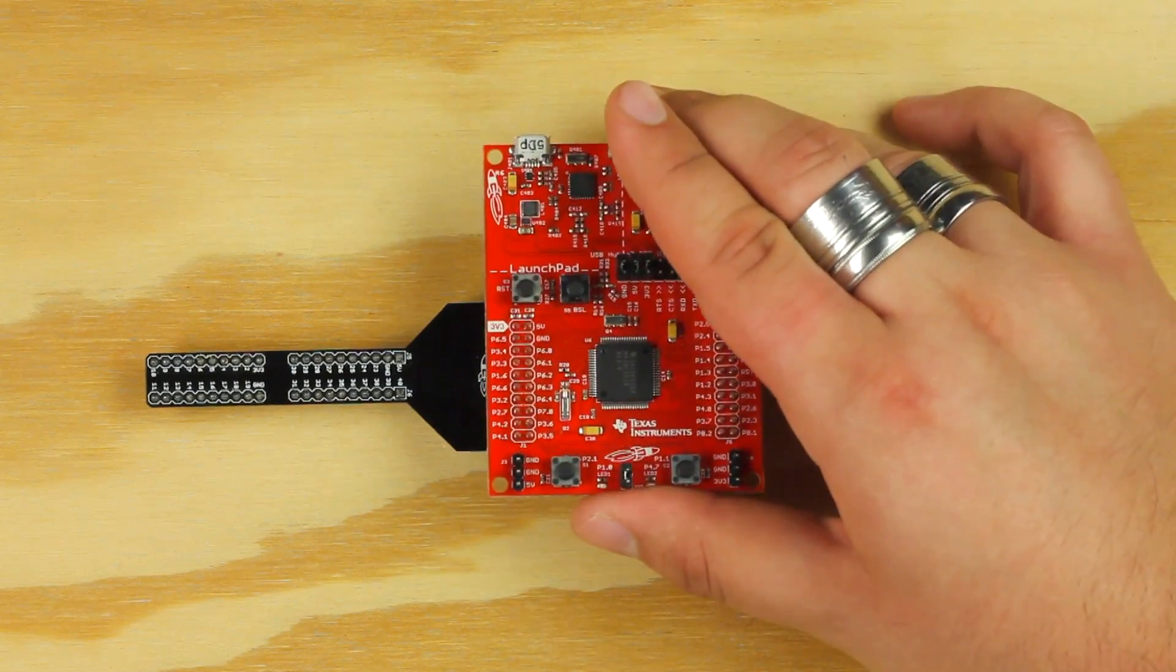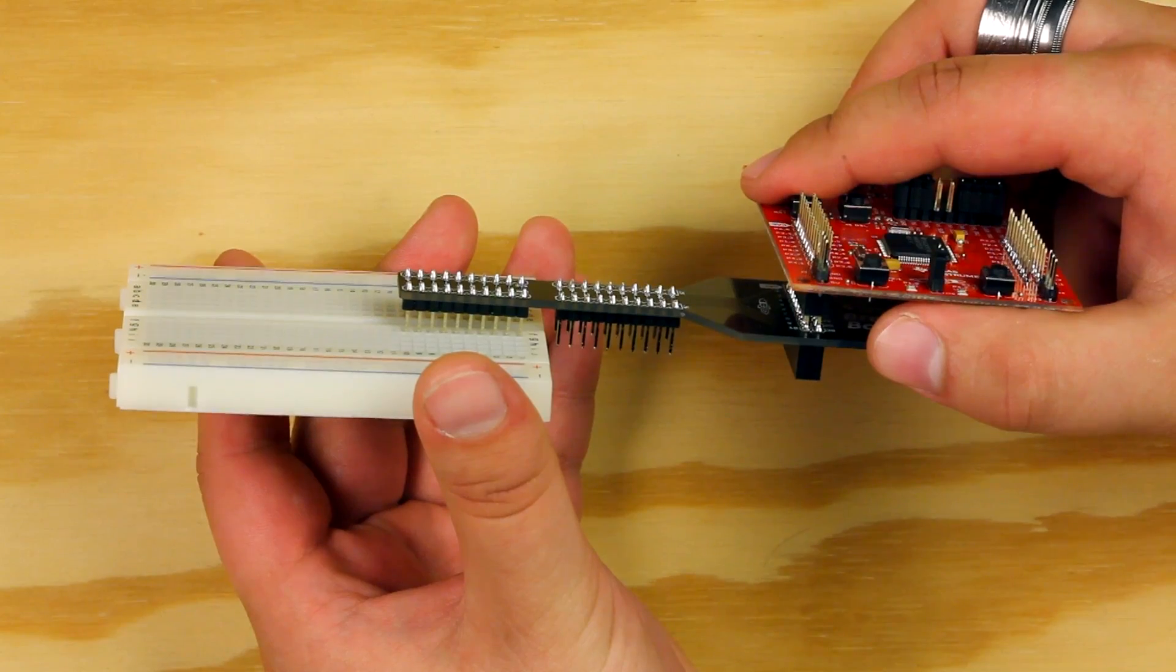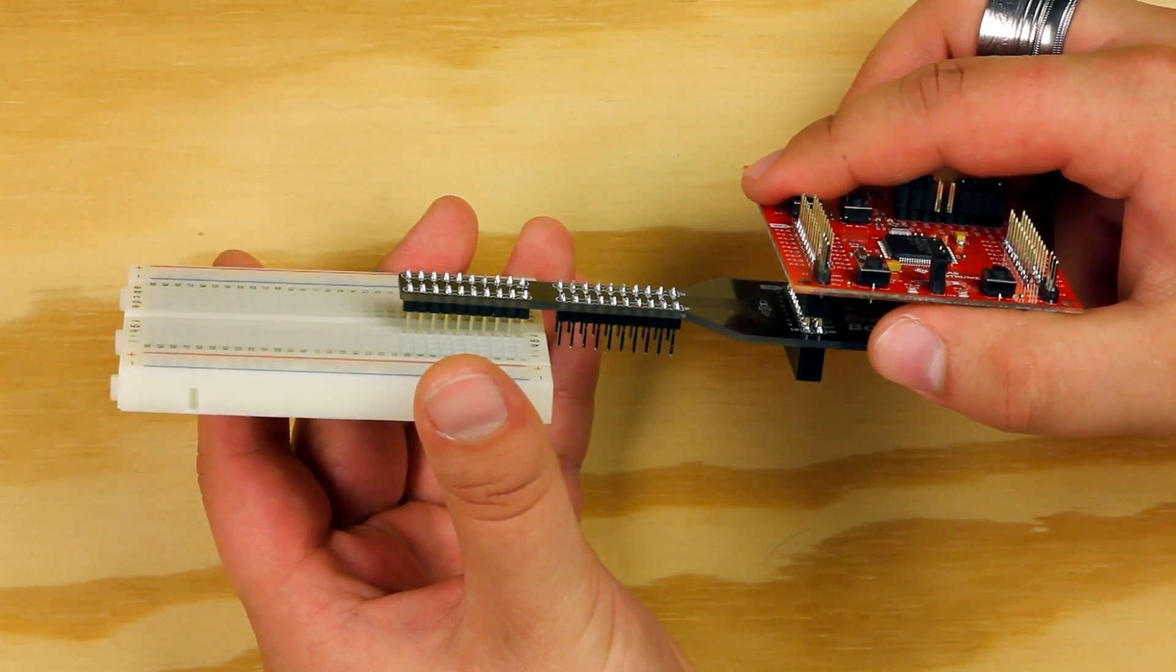Place your Launchpad on the top or bottom of the breadboard booster pack. Now insert your breadboard booster pack into the breadboard along the middle spine.